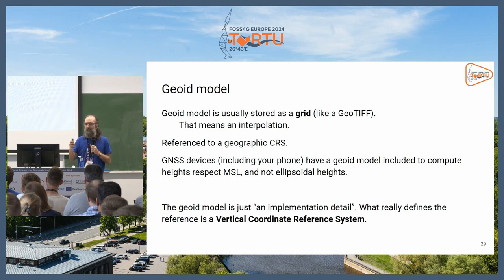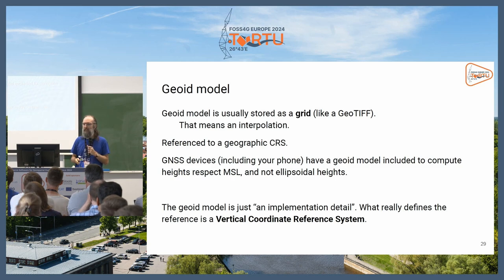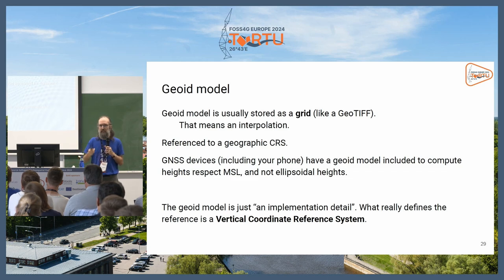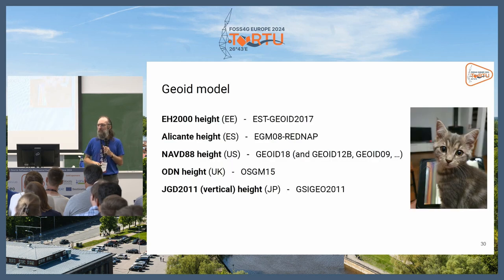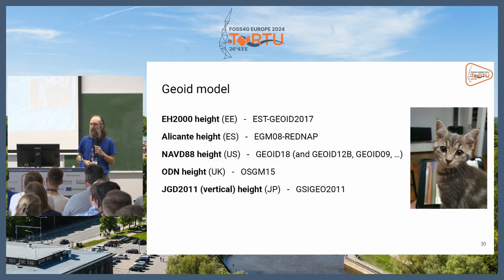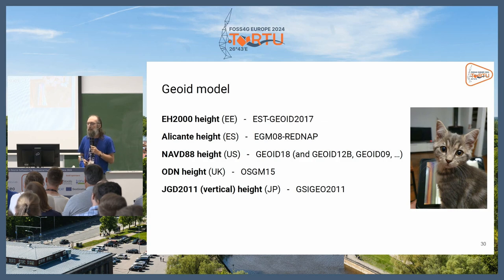PROJ supports vertical reference systems. This is an example of a command line converting from ellipsoidal to a compound CRS with orthometric heights in Spain. However, not every country publishes their geoid model. This map shows the geoid models included in PROJ data. There are examples for Estonia, Spain, the US, UK, and Japan, with the geoid models they use. The US has different versions because they keep updating their model with better implementations.